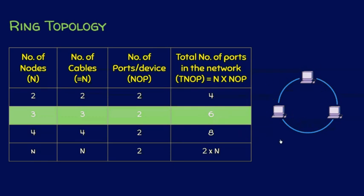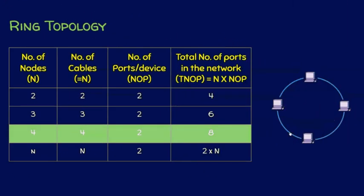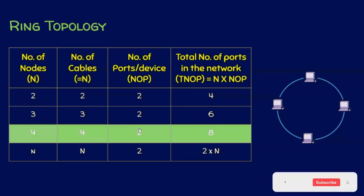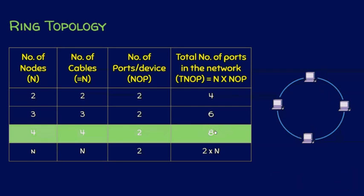Now, if the number of nodes is four in a ring topology, then four cables are required — cable one, two, three, and four. Each node must have two ports, so two plus two plus two plus two gives a total of eight ports required.